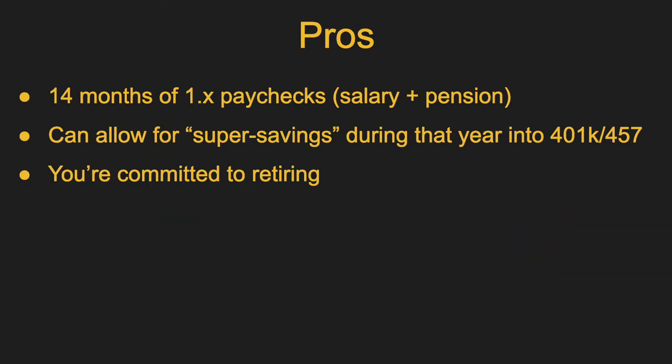Let's talk about the pros of the transition year. When I first started teaching in Colorado, most people generally said a transition year was a slam dunk — why wouldn't you do it? Here's why people think that: if you do a transition year, you get 14 months of a paycheck and a half or more, because you get your salary plus your pension. Some people call it a 'double dip year' but your pension won't equal your salary, so for most folks it's somewhere around 1.6 to 1.7 times pay. It's 14 months because if your school year ends in May, your first PERA benefit is end of June, which means you get June, July, and then 12 more months of salary from your district while also getting your PERA pension.